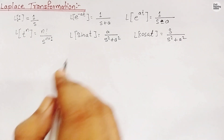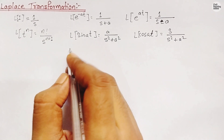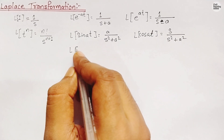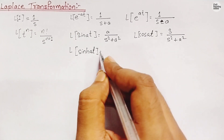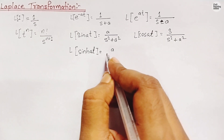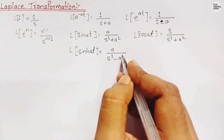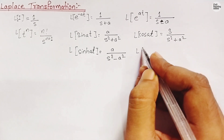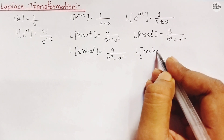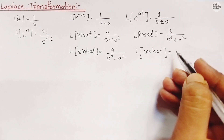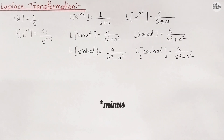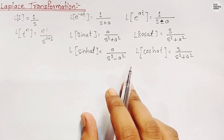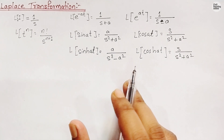Now, for hyperbolic trigonometric functions: Laplace transformation of sinh(at) is a/(s²-a²), and Laplace transformation of cosh(at) is s/(s²+a²). These are the basic formulas we will use while solving numericals based on Laplace transformation.